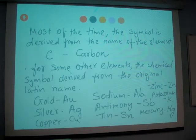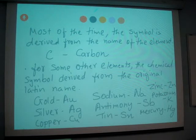Okay, so most of the times, symbols are derived from the original name. C for carbon, N for nitrogen, O for oxygen. So that's how you can write symbols.